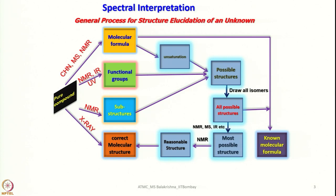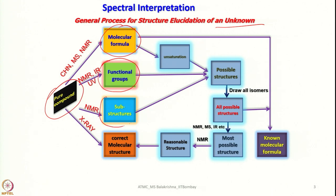Let us look into spectral interpretation and the general process we should follow for structural elucidation of an unknown sample. First, we should begin with purification of the compound. Let's say we have a pure compound — how to ascertain? We have to go for CHN analysis, or mass spectrometry data and NMR, which would give you information about molecular formula. And then NMR, IR, and UV can also give insight into the functional groups present.